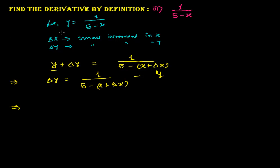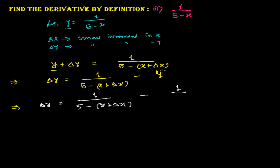In the next step, since y equals 1 over (5 minus x), I substitute that in. So delta y becomes 1 over (5 minus x plus delta x) minus 1 over (5 minus x). Now I need to take the LCM of these two fractions.